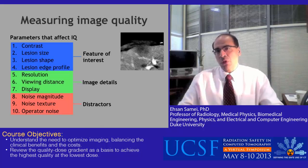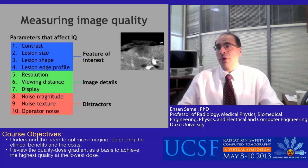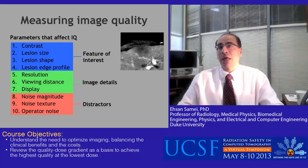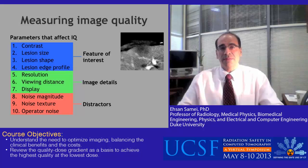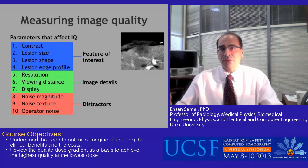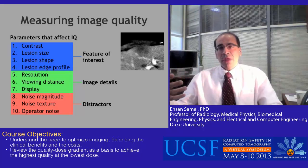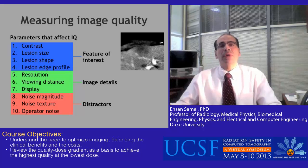We need metrics of image quality that are better than contrast noise ratio. What are the parameters that affect image quality? There are ten parameters. The first four reflect features of interest: contrast, lesion size, lesion shape, and lesion edge profiles. Three more reflect the level of detail in images: resolution, viewing distance, and the display device itself. Finally, there are distractors — things such as the noise present in the image as well as the noise the operator brings to the perception process. A metric that combines features of interest, imaging details, and distractors together would give us a better measure of image quality.